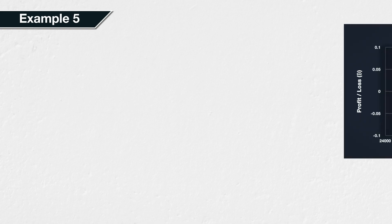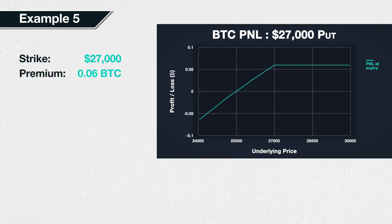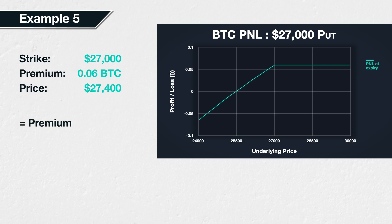Example 5. Suppose Bitcoin is currently trading at a price of $27,500. We expect the price to stop decreasing, so we sell a Bitcoin put option with a strike price of $27,000. The premium we collect for this put is 0.06 BTC. At expiry, the price of Bitcoin has increased slightly to $27,400. The Bitcoin price of $27,400 is above the strike price of $27,000, so the option has no value and we use the simple formula, which equals the premium, or 0.06. This short put position made a profit of 0.06 BTC.